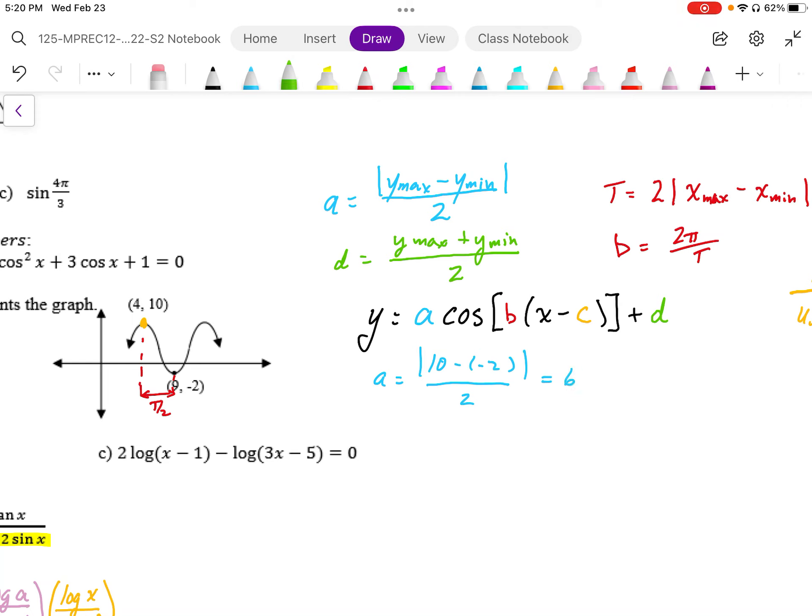Okay, the middle position or the vertical shift, I'm going to take the average of 10 plus negative 2. So, halfway between 10 and negative 2 is going to be positive 4. So, the middle line here is going to be at y equals 4. So, it's going to go 6 up to 10, 6 down to negative 2.